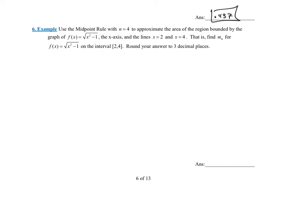Let's do the last example like this. It says: use the midpoint rule with n equal to 4 to approximate the area of the region bounded by the graph of f of x equals the square root of x squared minus 1, the x-axis, and the lines x equals 2 and x equals 4. Round your answer to three decimal places. So essentially, find M4 for that function on the interval 2 to 4.